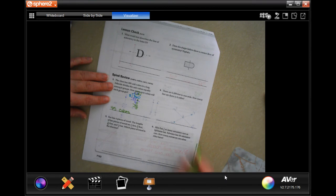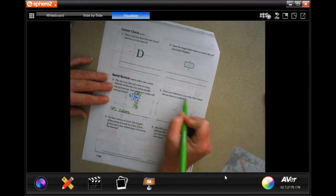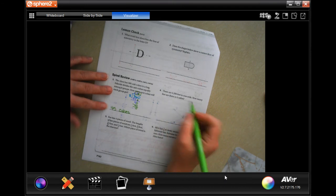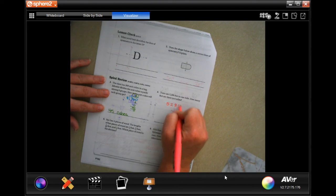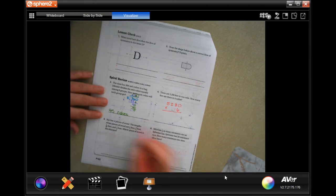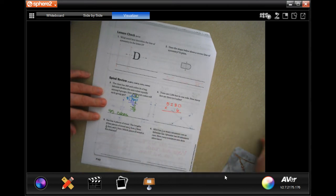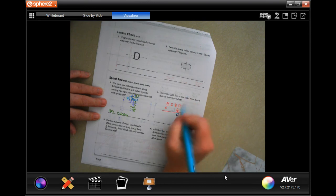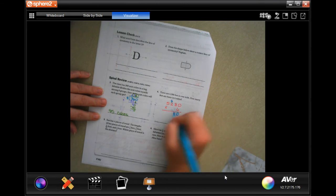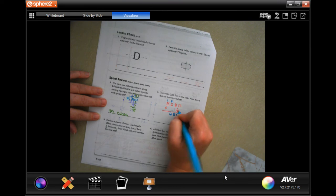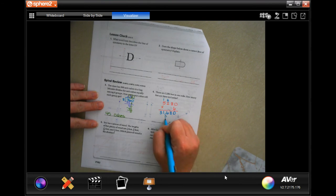There are 5,280 feet in one mile. How many feet are there in six miles? So I am going to take 5,280 feet and I'm going to times it by six because this is one mile and I need six miles. Six times zero is zero. Six times eight is 48, carry four. Six times two is 12 plus four is 16, carry one. And six times five is 30 plus one more, 31. 31,680 feet.